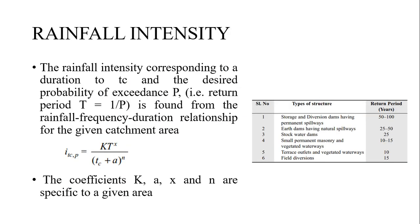Rainfall intensity IC is measured corresponding to a duration TC and the desired probability of exceedance. The return period T equals 1 by P, and this can be found from the rainfall frequency-duration relationship. The formula has constants: k is a constant, t is the required return period, x is a constant, TC is the time of concentration, and a and n are basin constants.